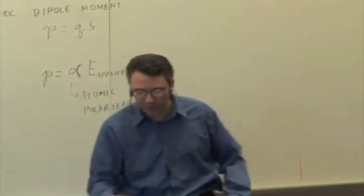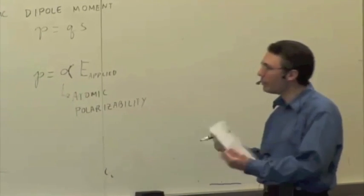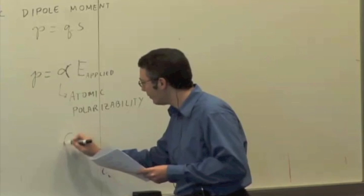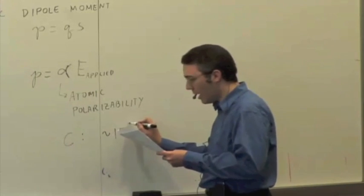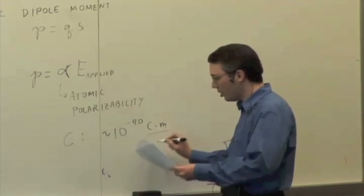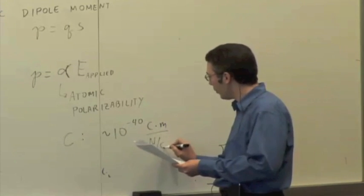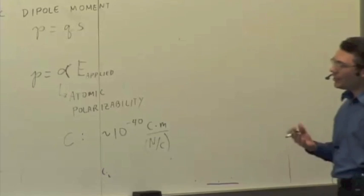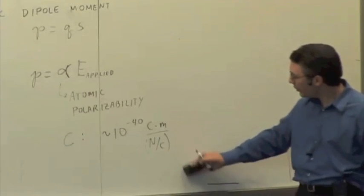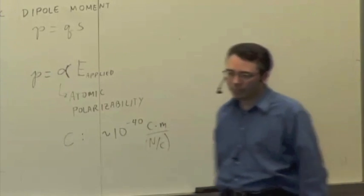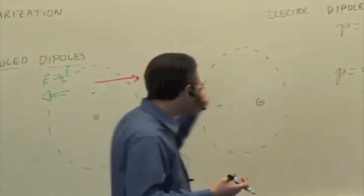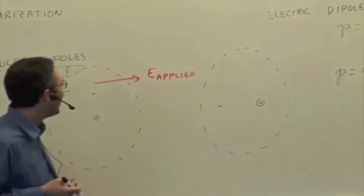So for example, carbon atoms, a carbon atom has a particular atomic polarizability of something like 10 to the minus 40, and the units are coulomb meters over newtons per coulomb. It's just a parameter or a property of the material. And the larger the atomic polarizability, the more it's going to polarize, the bigger the dipole moment's going to be when you apply the same electric field.